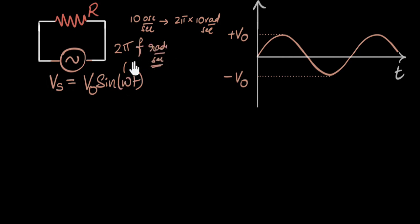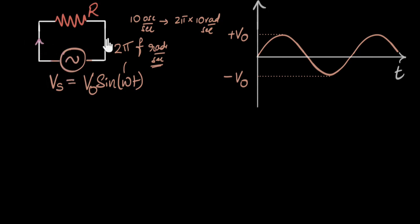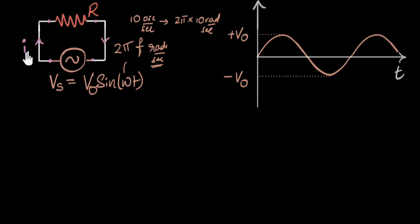Now that we know everything about voltage, we want to figure out the same thing for current — what the current graph looks like and how those oscillations compare with the voltage oscillations. Let's assume the current I is flowing in the circuit. Since we only have a resistor, we can use Ohm's law. Whatever is the voltage across the source is the same as the voltage across the resistor, since it's the only element. It would be a great idea to pause the video and see if you can figure out the equation for current yourself.